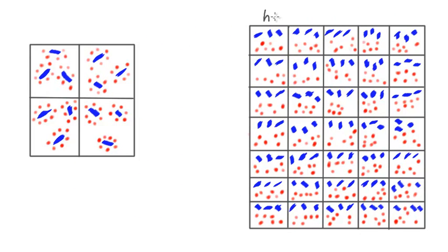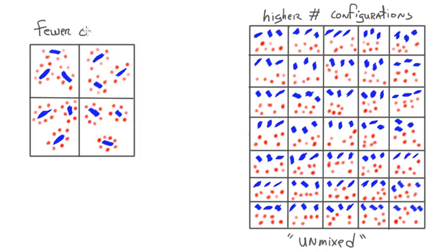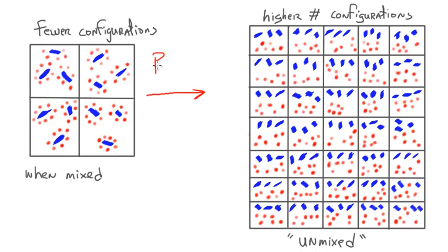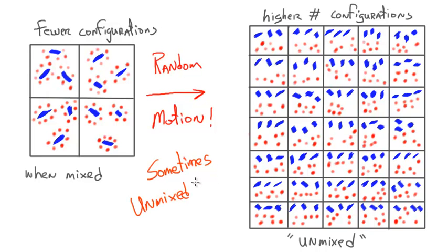There are also situations where there are actually more configurations when substances don't mix than when they do, and this seems a little odd. On the left-hand side, the blue and red particles when mixed have only a certain number of accessible configurations, but in the unmixed state there are many more configurations accessible. Therefore, sometimes unmixed has a higher number of configurations than the mixed state. So you can't always assume that random motion will lead to mixing — in fact, random motion in this situation leads to unmixing, with the system moving to configurations where the substances are not mixed. We have to take into account the potential energy related to attractive forces as well as what's favored in terms of configurational stability, mixed or unmixed.